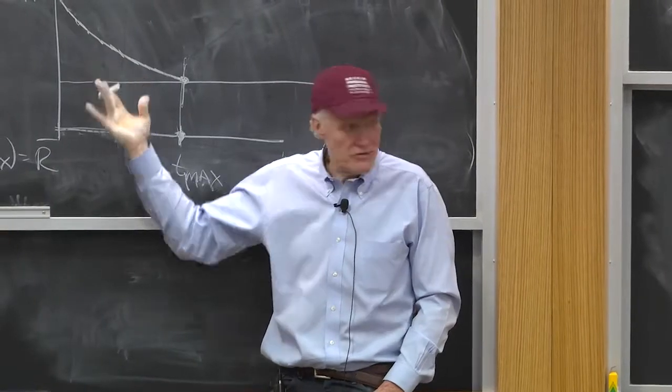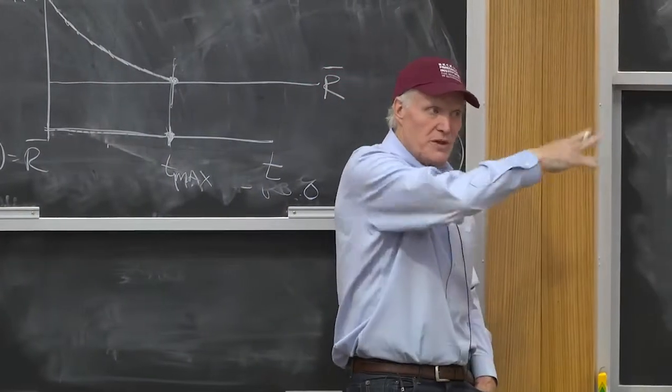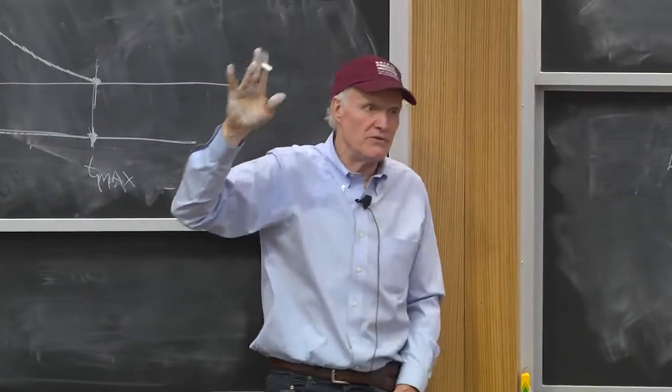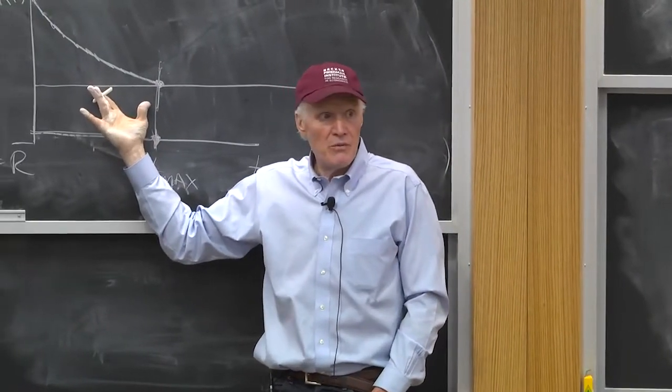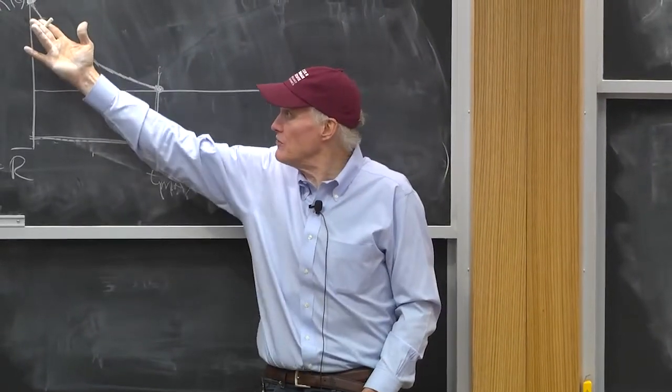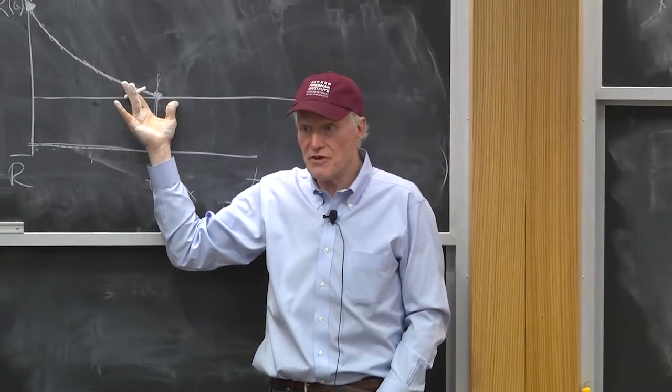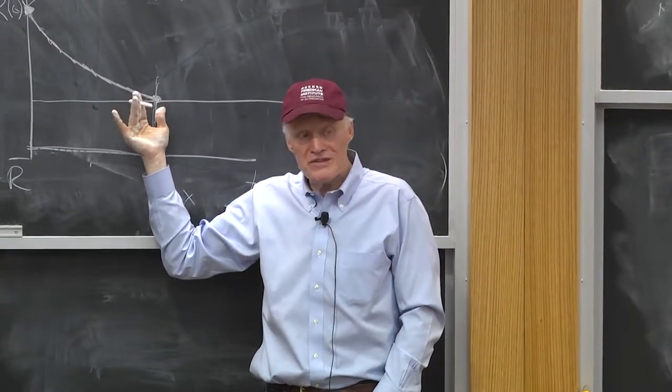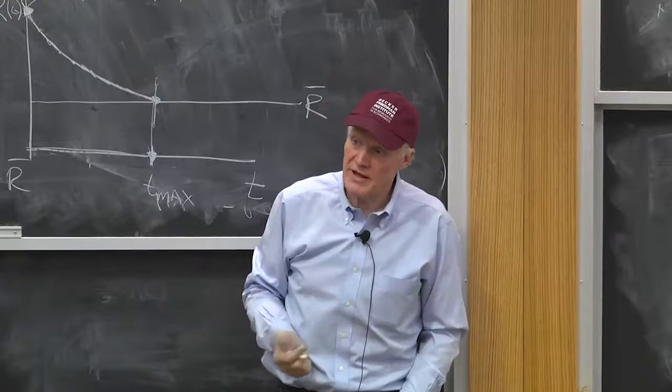They will sort themselves. Just like our earlier people sorted themselves between the A's and the B's. These people will sort themselves out with the higher wage people living closest and the lowest wage people living furthest. And the rents will be determined according to this formula I just wrote on the board.